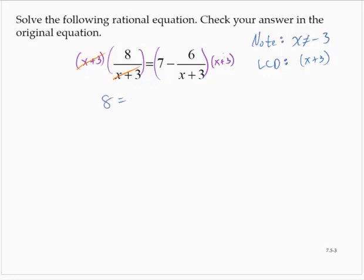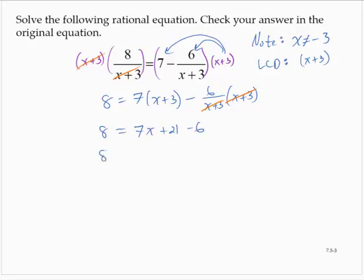Now on the right-hand side, I have to apply the distributive property. So I'd have 7 times x plus 3 minus 6 over x plus 3 times x plus 3. And that second term, the x plus 3's reduce, leaving 8 is equal to 7x plus 21 minus 6, or 8 is equal to 7x plus 15.